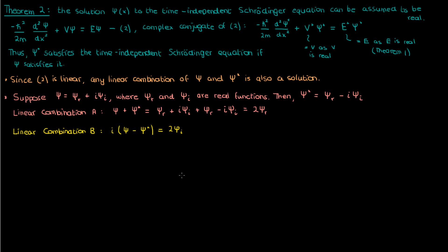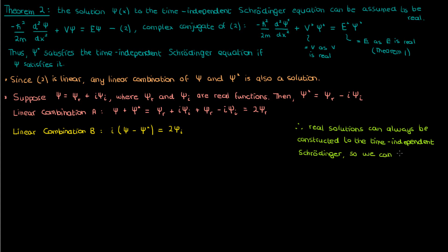Both ψ_r and ψ_i are real functions, and they both satisfy the time-independent Schrödinger equation. It is more convenient — and also possible — to assume that the solutions are real by default, because we've just constructed purely real solutions. Even if I had a complex solution, I could still use it to construct real solutions. Therefore, we can simply assume that solutions to the time-independent Schrödinger equation are real by default.